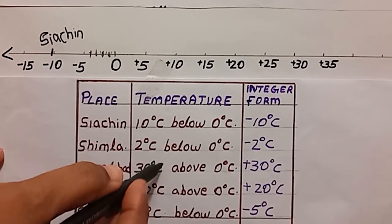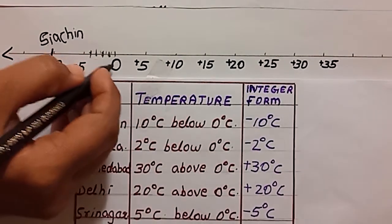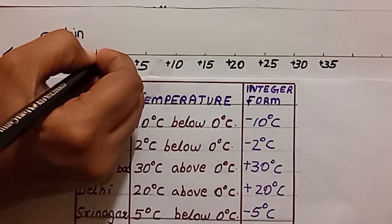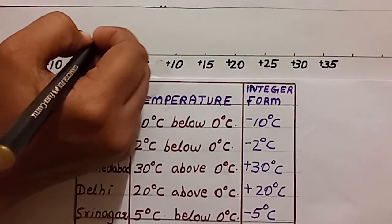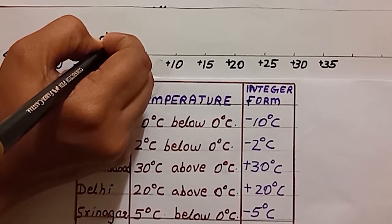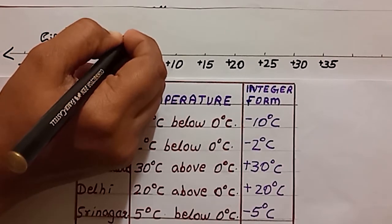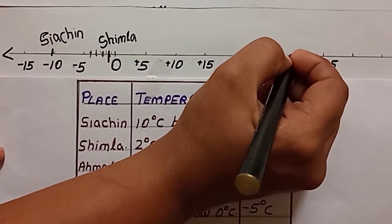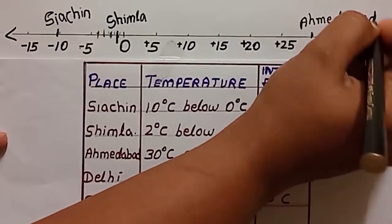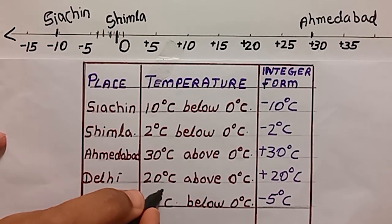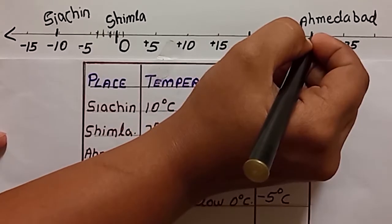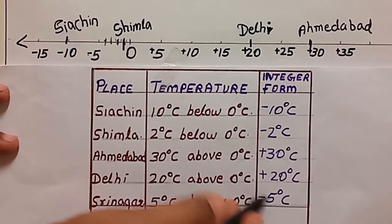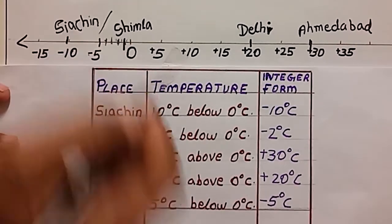Then Shimla — minus 2 degree Celsius. Here is 0 degree and this is minus 5 degree, so this point is Shimla. Then next one Ahmedabad — positive 30 degree, so here is Ahmedabad. Next one Delhi — positive 20 degree, so this is Delhi. Next one Srinagar — minus 5 degree, so this is Srinagar.